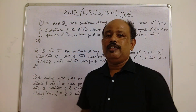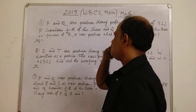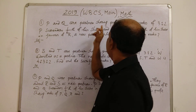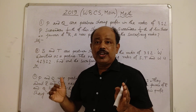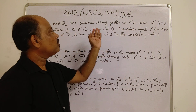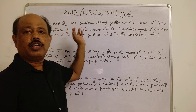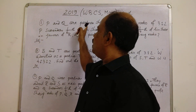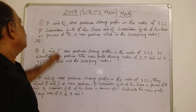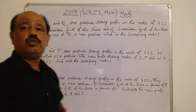First question: P and Q are partners sharing profits in the ratio 3 is to 2. P surrenders 1/5th of his share and Q surrenders 1/4th of his share to a new partner.